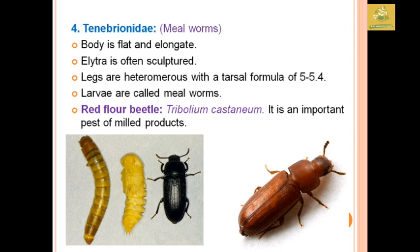Tenebrionidae comprises mealworms. The body is flat and elongate, elytra often sculptured, and legs are heteromerous with a tarsal formula of 5-5-4. The larvae are called mealworms. An example is the red flour beetle, Tribolium castaneum, which is an important pest of milled grain products.